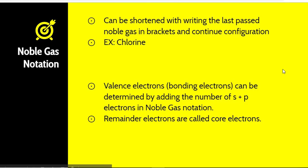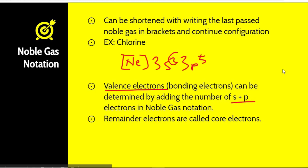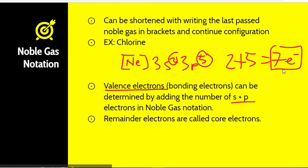If we look at chlorine, the last noble gas we passed is neon. So after neon, we would write the remainder of the electron configuration: 3s2, 3p5. What's nice about this is we can determine the number of valence electrons by adding the number of S and P electrons from the noble gas notation. We have 2 electrons in 3s and 5 in 3p — 2 plus 5 is 7 electrons. So there are 7 valence electrons in chlorine.